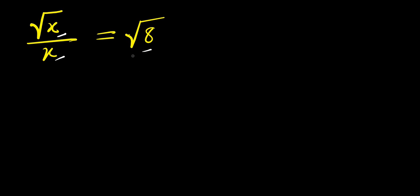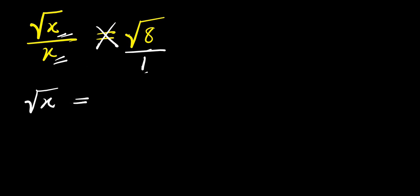Let's start with this method. I have this divided by 1, so I can cross multiply. Square root of x will multiply 1, giving square root of x, and x will multiply root 8, giving x times root 8.